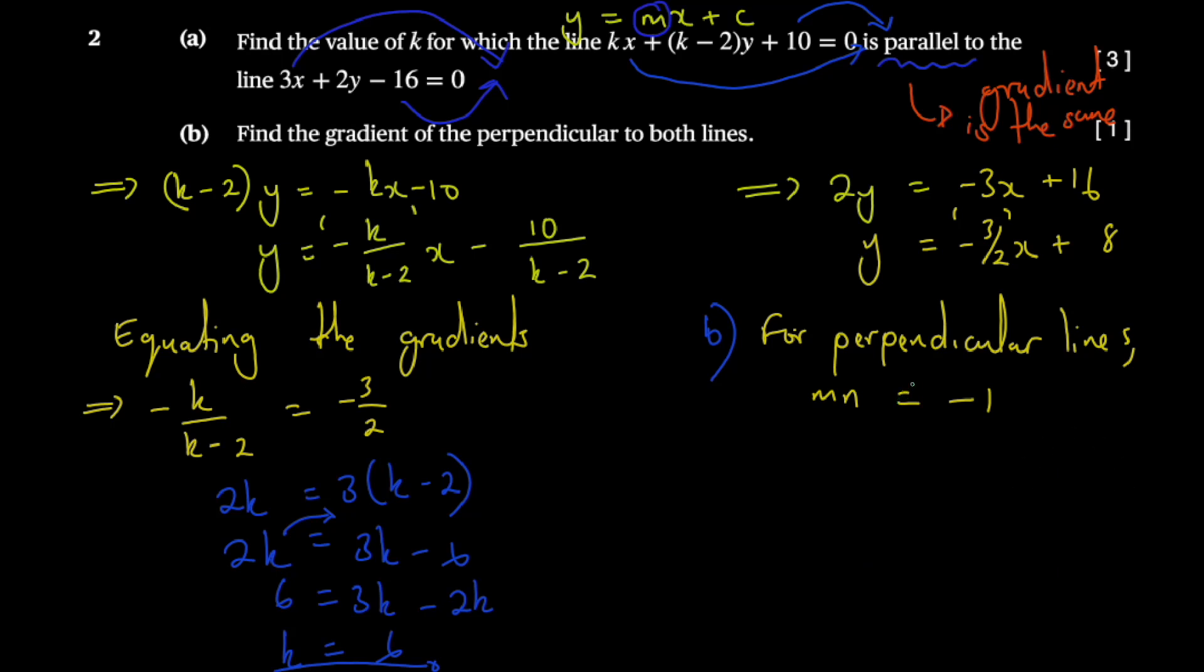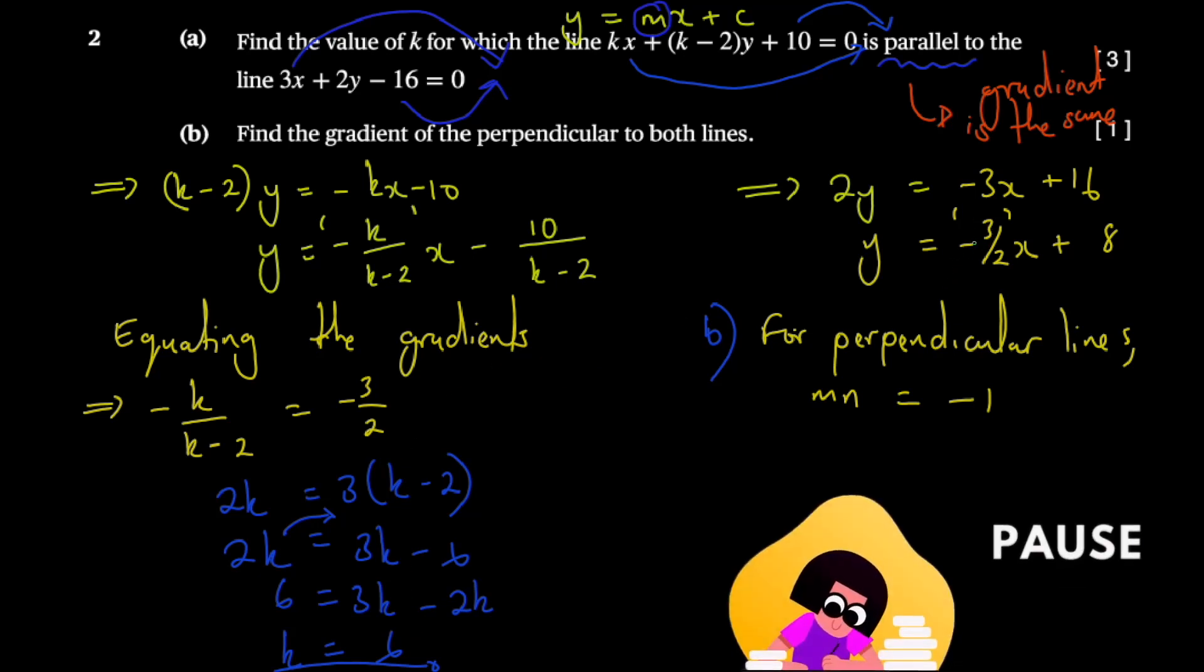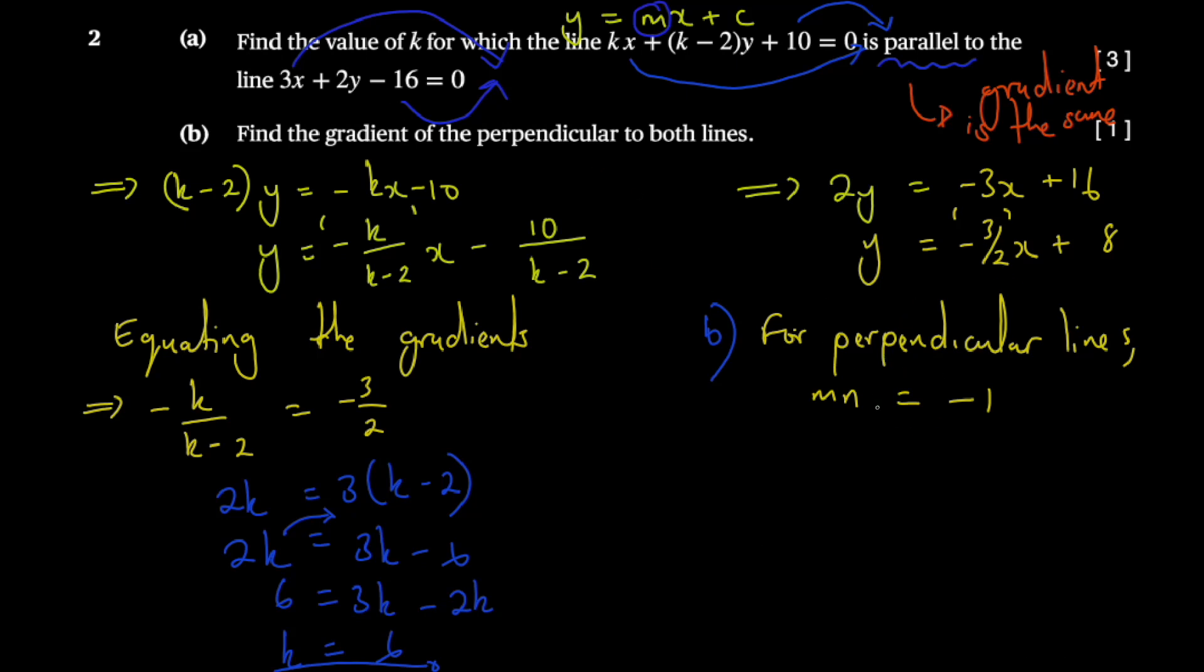Once you're done with this part, you proceed to say the gradient for this one is obviously -3/2. We knew it from this previous part here.